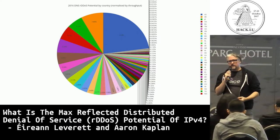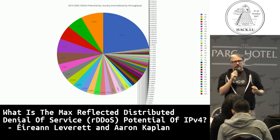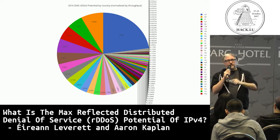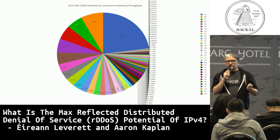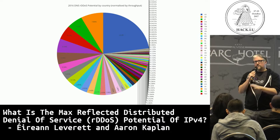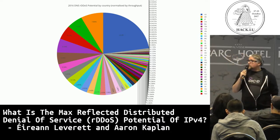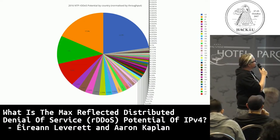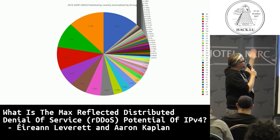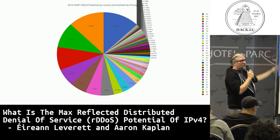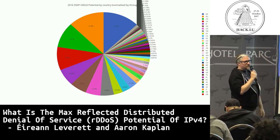Going back to Aaron's point about economics: if we could translate terabits into dollars and cents or euros, you can start making discussions about BCP38 and its value to the community. If you implemented BCP38, you could mitigate this much economic damage to businesses. We have these diagrams for multiple protocols - NTP, SNMP, same story. It's like 5 to 10 major players comprising the top half of the DDoS potential of IPv4.